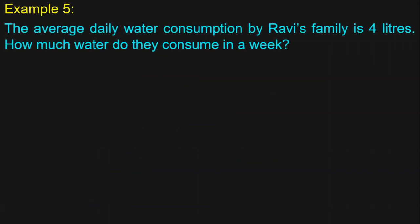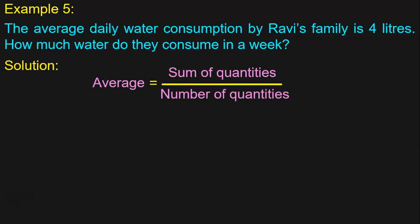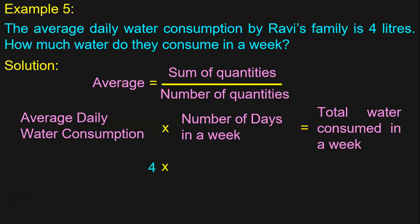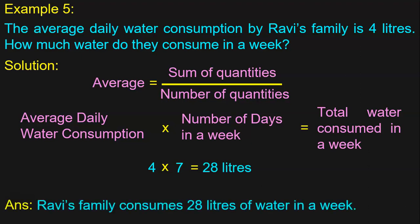Let us do one more example. The average daily water consumption by Ravi's family is 4 liters. How much water do they consume in a week? Write down the formula for average: average is equal to sum of quantities by number of quantities. Average daily water consumption multiplied by the number of days in a week should give you the total water consumed. 4 liters into 7 days — if they drink 4 liters per day for 7 days, 7 into 4 is 28 liters of water. Ravi's family consumes 28 liters of water in a week.